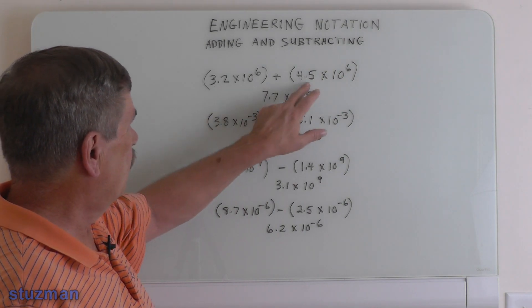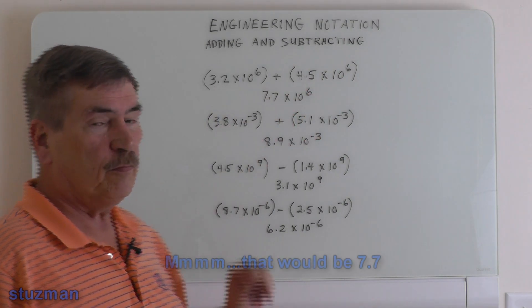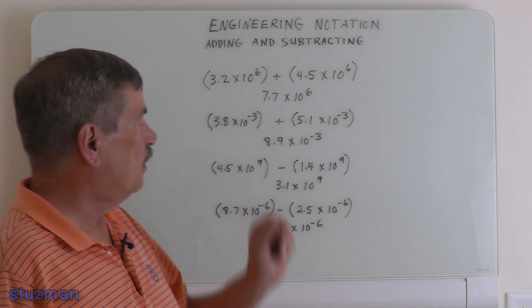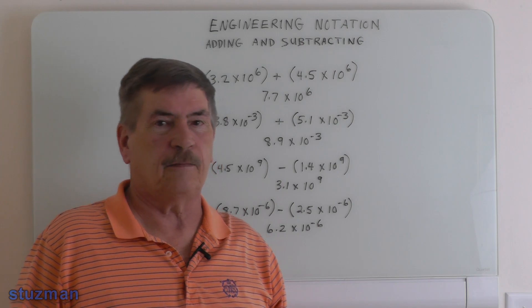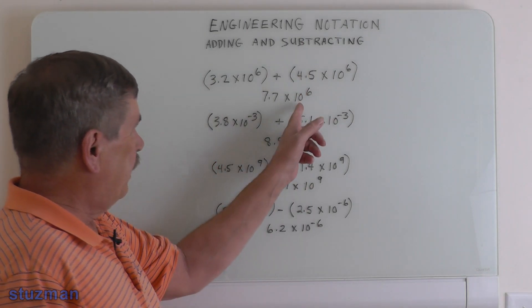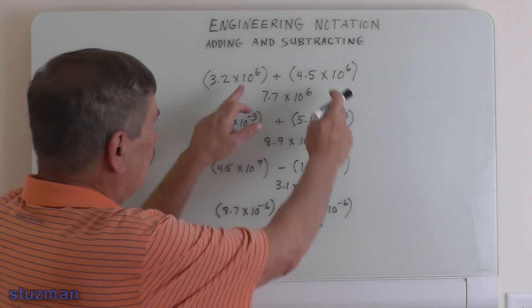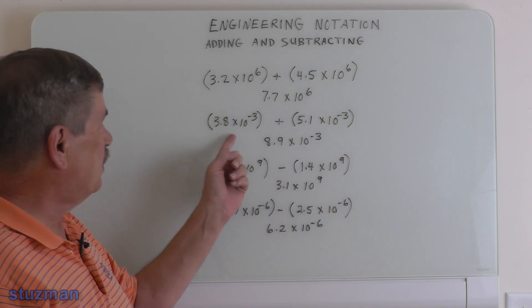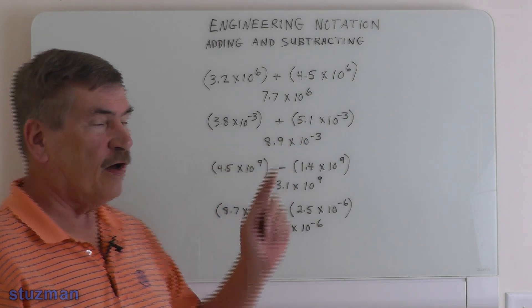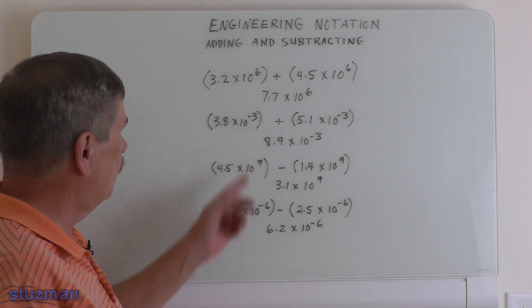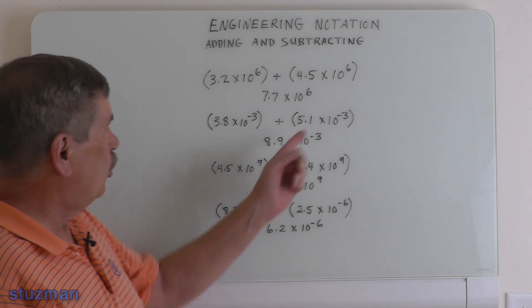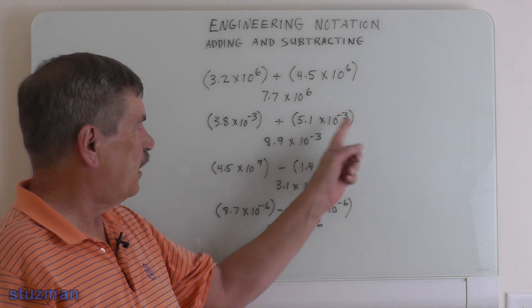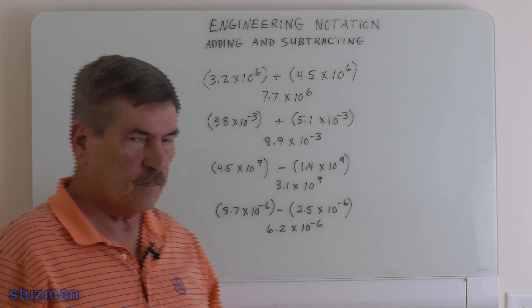If we take 3.2 and add 4.5, we'll get 7.7. Notice that on both sides the power is 10 to the 6, and then we just bring that 10 to the 6 down into our final answer. In the next example, 3.8 plus 5.1 gives us 8.9. The power is 10 to the minus 3 on both sides, so we just bring it down. It's very simple.